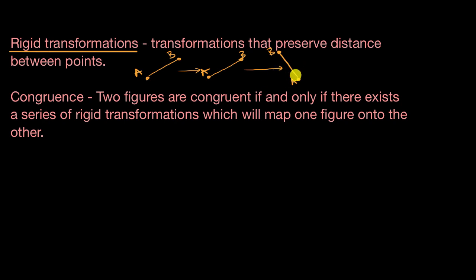It could even be things like taking the mirror image. Once again, that's not going to change the distance between A and B. What's not a rigid transformation? Well, one thing you might imagine is dilating, scaling it up or down. That is going to change the distance. So rigid transformations are any transformations that preserve the distance between points.